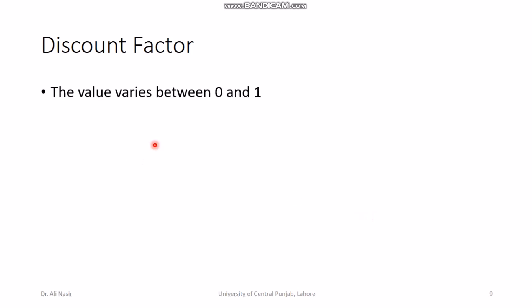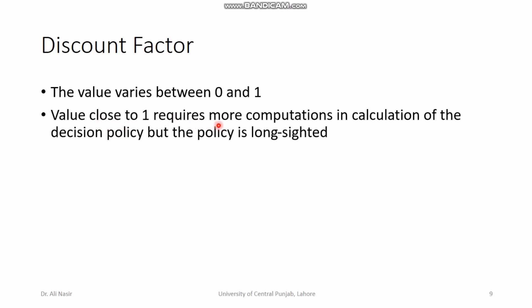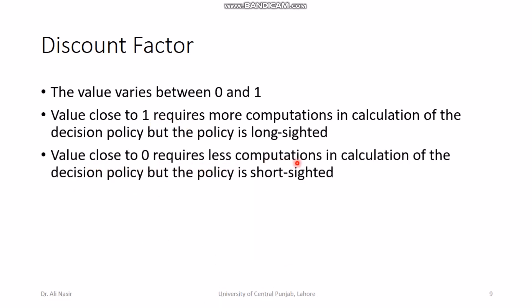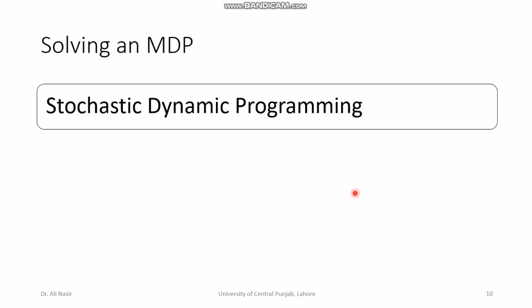The discount factor's value is between 0 and 1. A value close to 1 requires more computations in calculating the decision policy, and distant states will have almost equal value to immediate states. For values close to 0, the computational requirement is less. Markov processes are solved by iterative processes — when the discount factor is close to 1, more iterations are required; when close to 0, fewer iterations are needed.